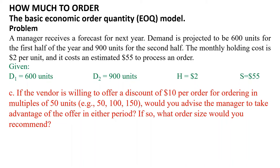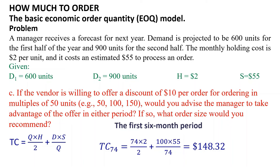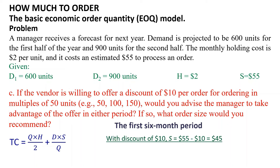The last question: if the vendor is willing to offer a discount of $10 per order for ordering in multiples of 50 units — for example 50, 100, or 150 — would you advise the manager to take advantage of the offer in either six-month period? To solve this, we calculate the total cost corresponding to Q0, 50, 100, and 150 for each period and select the quantity that gives the minimum total cost. For the first six-month period, TC(74) equals 74 multiplied by 2 divided by 2, plus 100 multiplied by 55 divided by 74, equals $148.32. With a discount of $10, S equals $55 minus $10 equals $45.